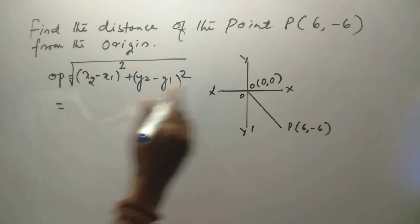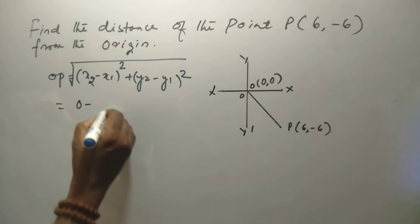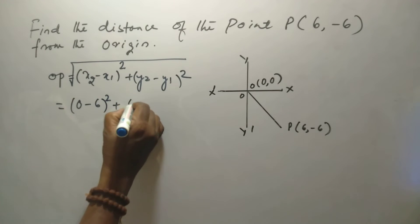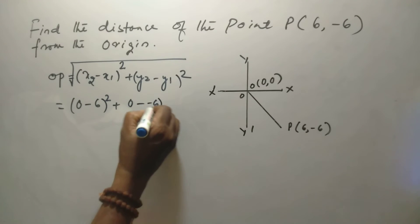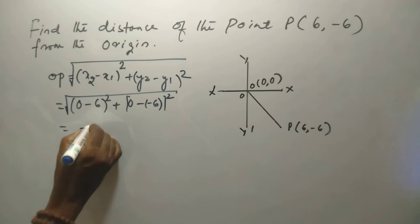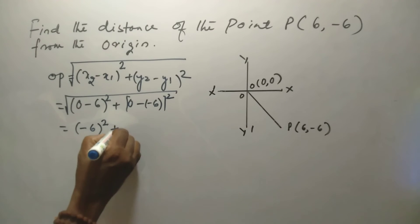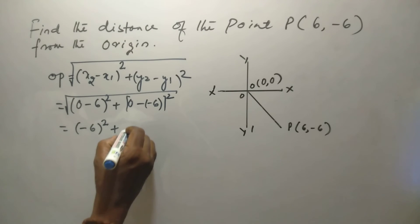So, square root of (0 minus 6) whole square plus (0 minus minus 6) whole square. Now, this is (-6) square plus, this is (+6) square.